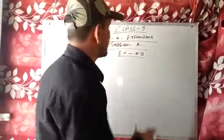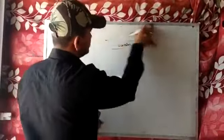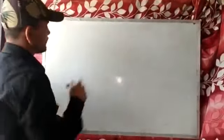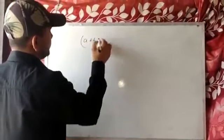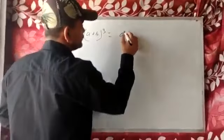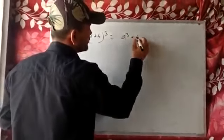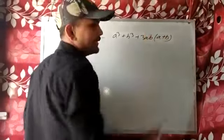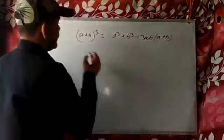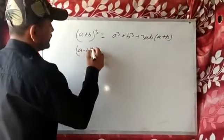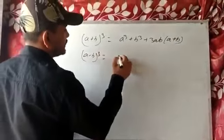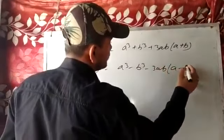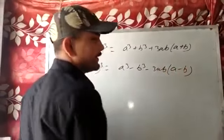Before I start the chapter, I think you should know some formulas. a plus b whole cube is equal to a cube plus b cube plus 3ab into a plus b. a minus b whole cube is equal to a cube minus b cube minus 3ab into a minus b.